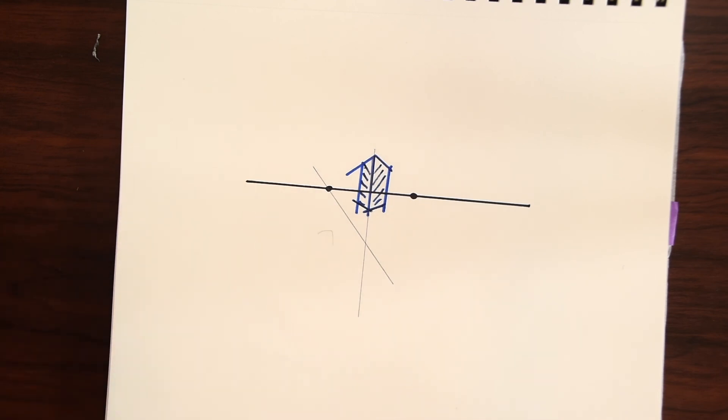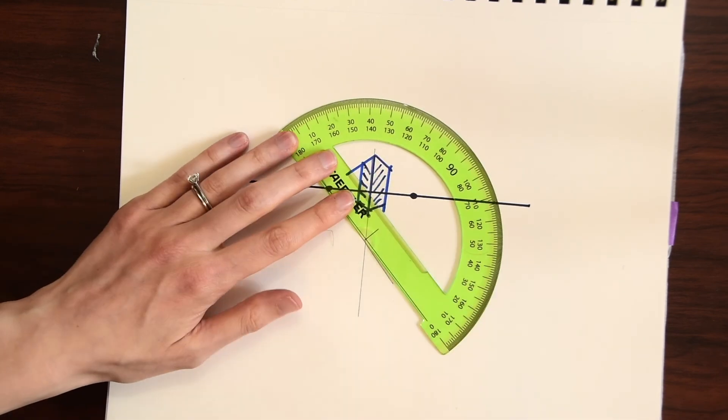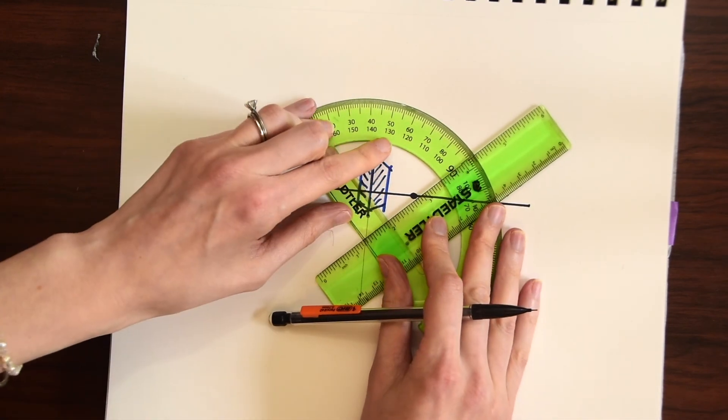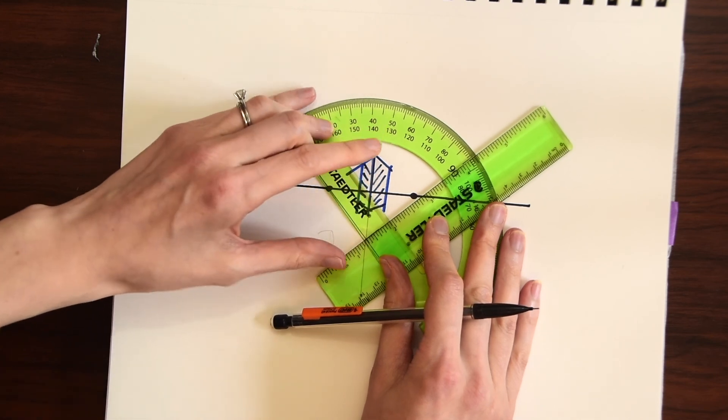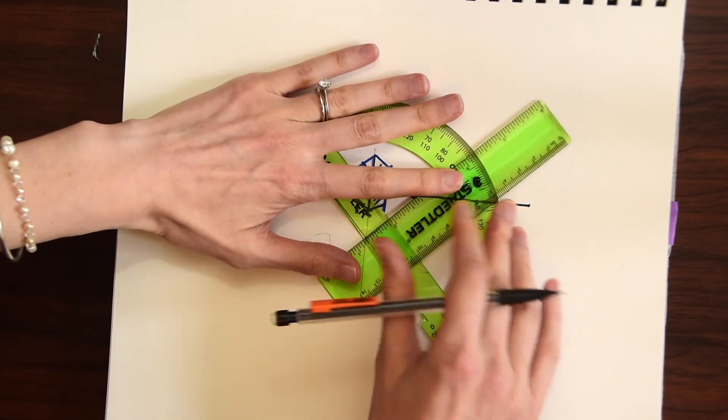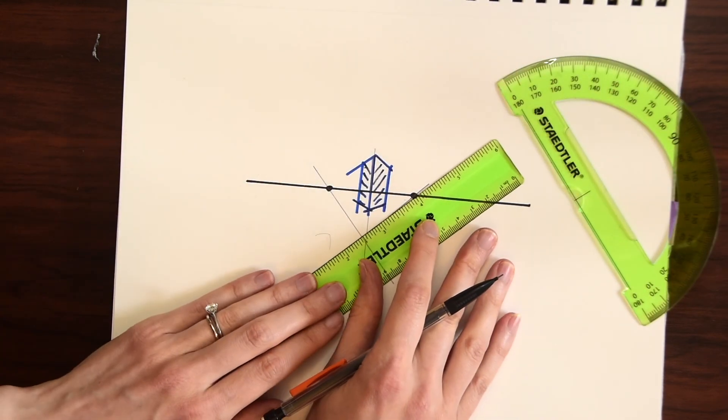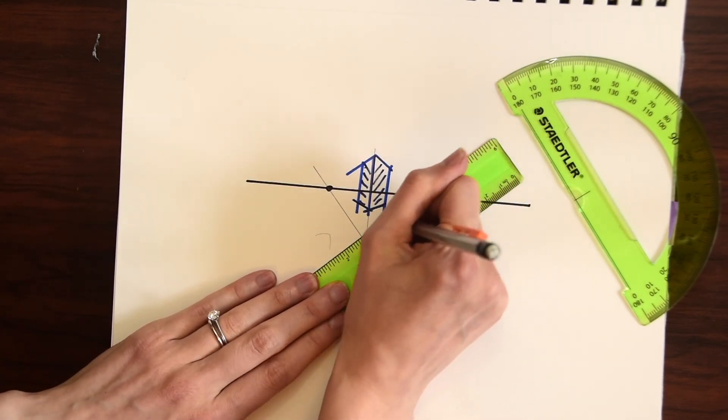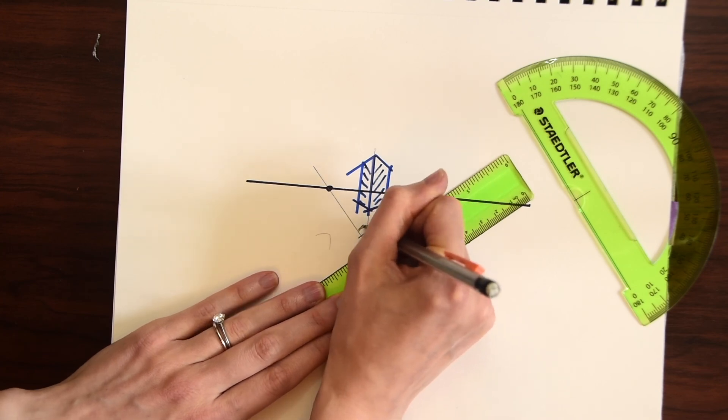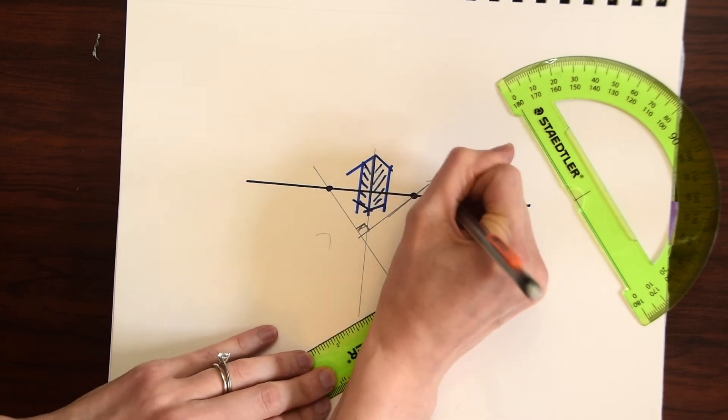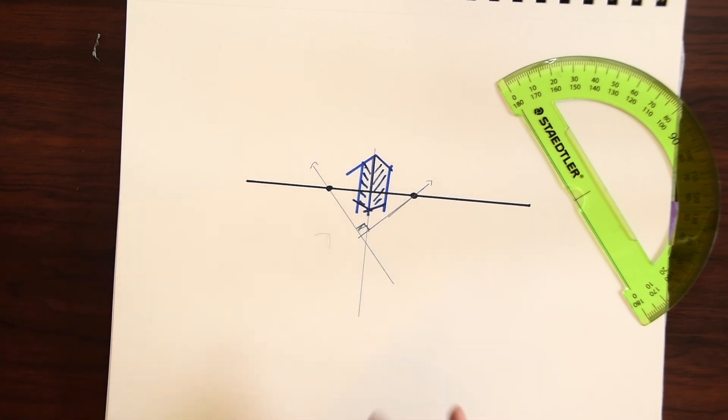So let's just draw a line see where we end up. So notice this is also 90 degrees away so these two points are again 90 degrees away two vanishing points and totally different lines totally different distances for each set of vanishing points but they are both 90 degrees apart.